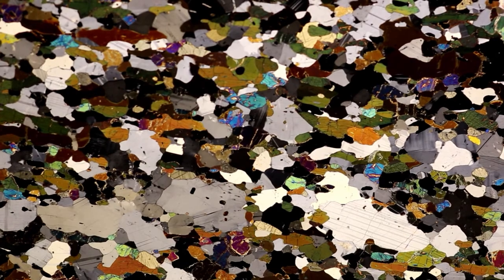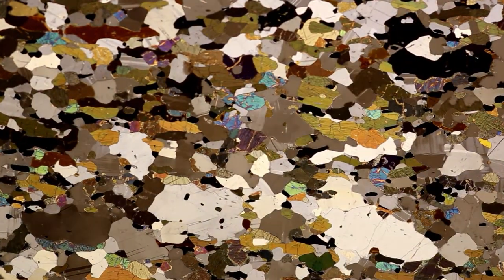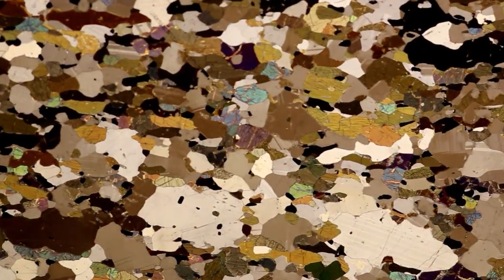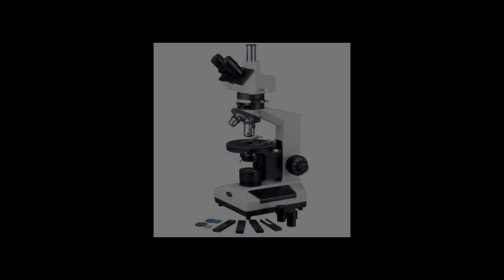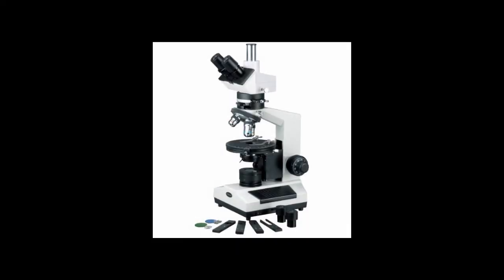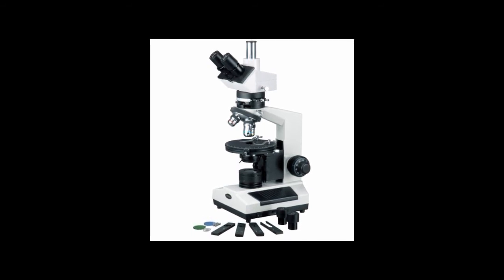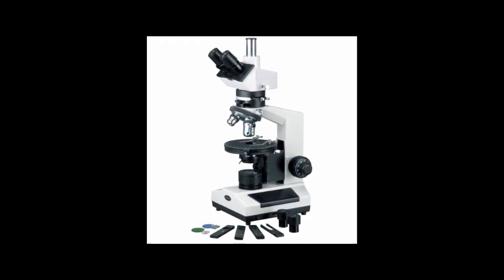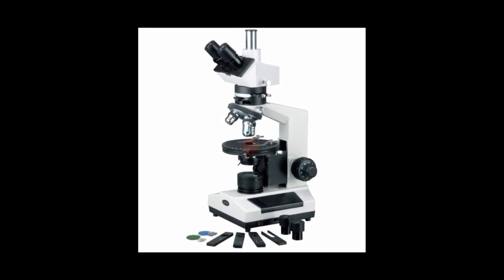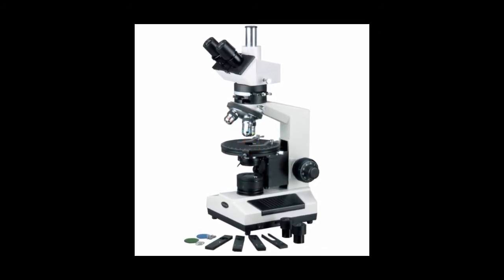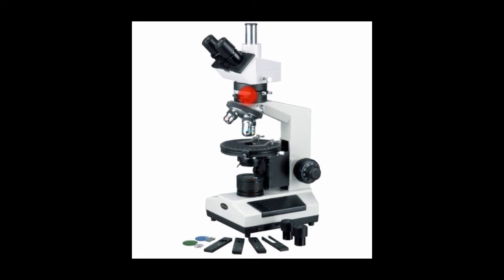In the past, the only way to see spectacles such as these would have been to cut and polish a rock so that it becomes paper thin, and then you would have to place it on one of these. This is a polarizing or petrographic microscope, and it is distinguished from the more usual biological microscope in that it is equipped with a rotating stage and two polarizing filters, one below the sample and the other above it.